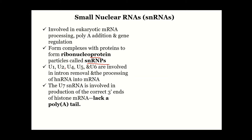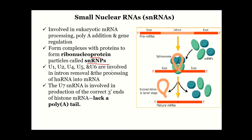U1, U2, U4, U5, and U6 are involved in intron removal, as shown on this diagram. Remember the pre-mRNA has introns and exons — these are intervening sequences that must be removed. The snRNPs will come and bind to the intron, forming what is called the spliceosome. Once bound, it will excise, remove, or cut off the intron from the RNA, giving us a mature mRNA that can be translated into proteins.